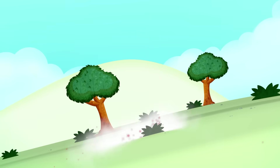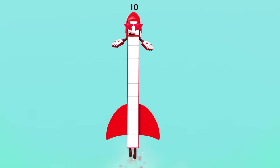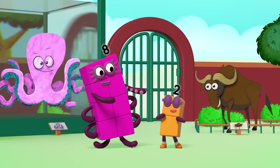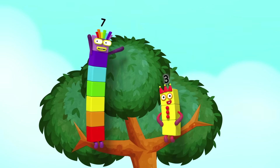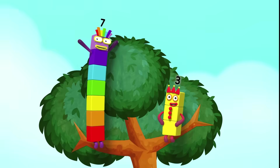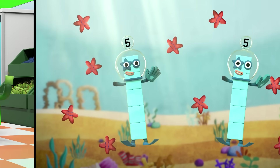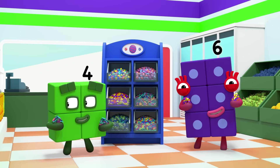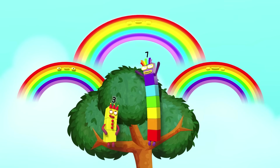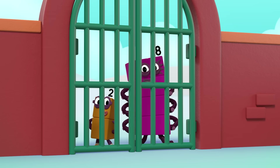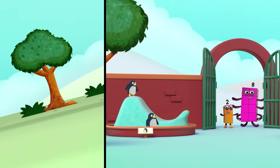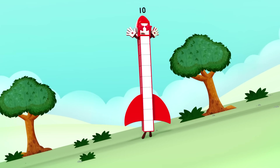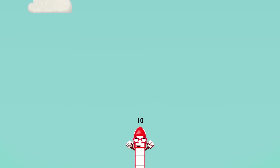Ten, ten, ten again, again. Nine plus one, going for a run. Eight plus two, visiting the zoo. Seven plus three, sitting in a tree. Six plus four, shopping at the store. Five plus five, on a scuba dive. Four plus six, buying big mix. Three plus seven, gazing up to heaven. Two plus eight, opening a gate. One plus nine, starting on a climb. And then I'm ten, ten, ten again, again.